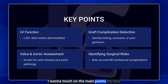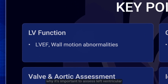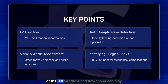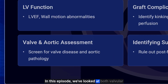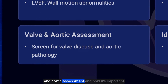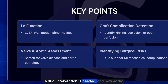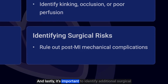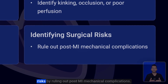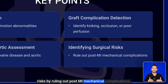To summarize the key points for performing TEE during CABG surgery: we address the left ventricle by assessing both global and regional LV function and how these can help detect graft complications such as kinking, occlusion, or poor perfusion. We also perform valvular and aortic assessment to decide if a dual intervention is needed and how aortic pathology influences surgical decision-making. Finally, it's important to identify additional surgical risks by ruling out post-MI mechanical complications.